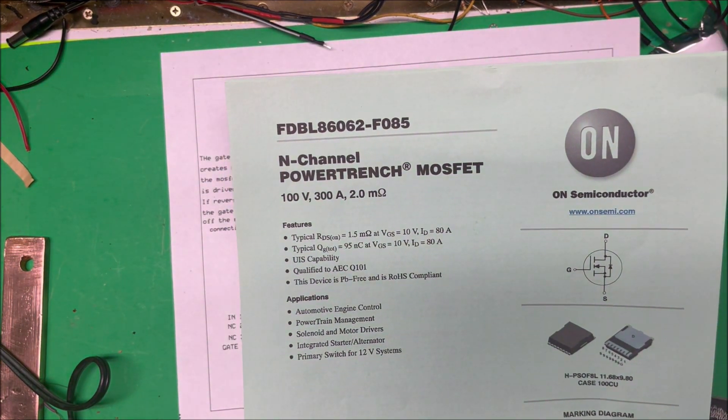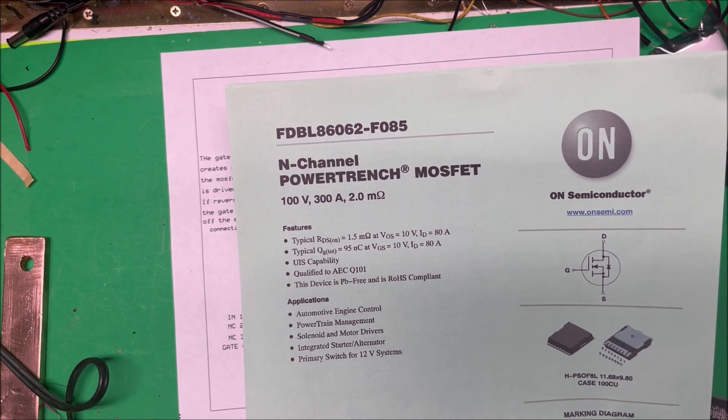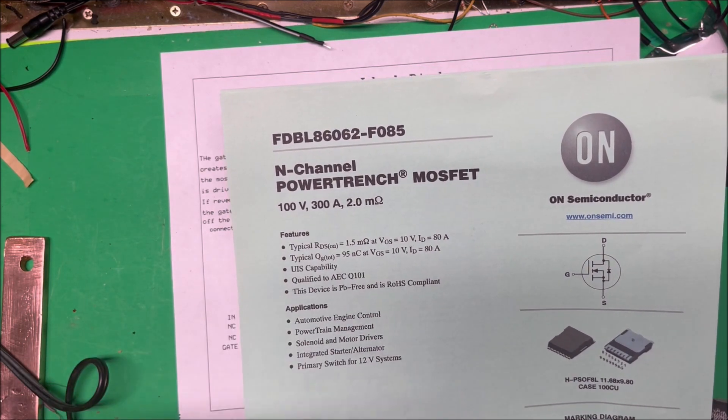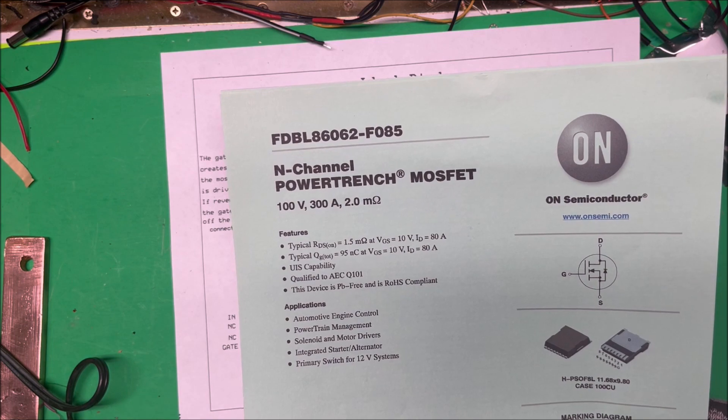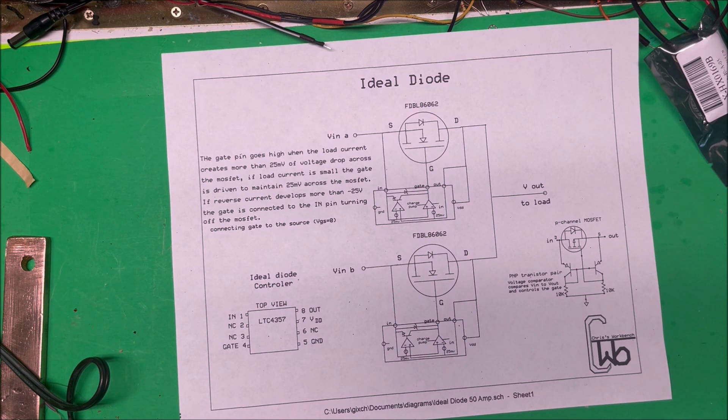It's an 86062 MOSFET, so it's actually good for 80 amps or 300 amps, but this unit is good for 50 amps. They say if you have it at that, you need more of a heat sink on it. That's the MOSFET, it's an N-channel MOSFET.